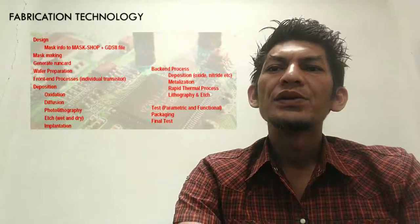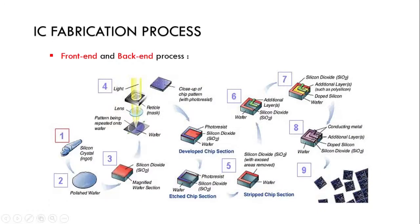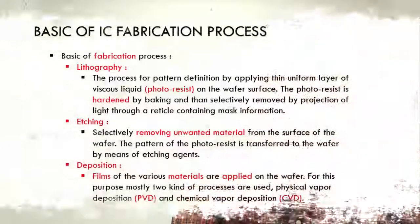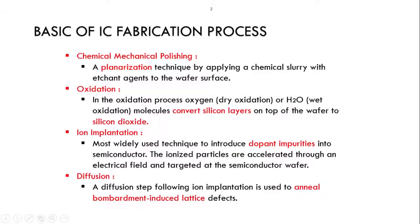We have diffusion process, photolithography, etching process, and implantation. This is the process of how we put one transistor — the whole process of making the transistor from silicon. The basic IC fabrication processes include lithography process, etching process, deposition process, chemical mechanical polishing, oxidation process, ion implantation, and diffusion process.